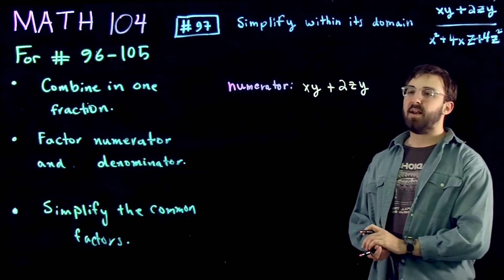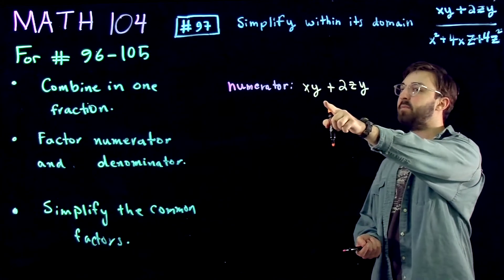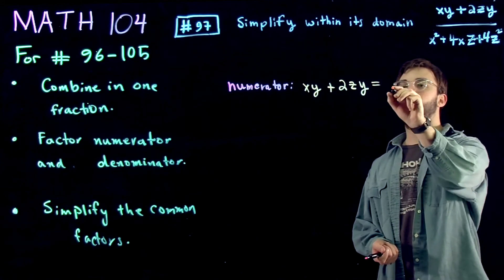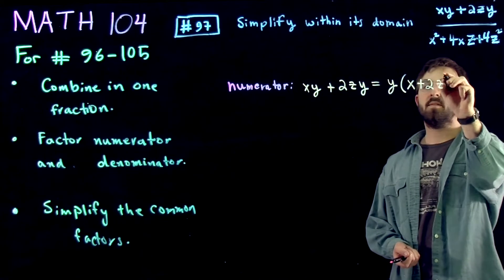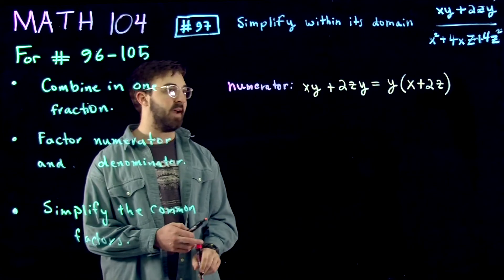You can factor this by observing that y is the common factor for the term xy and the term 2zy. So if we factor out y, we're left with x plus 2z. And that's completely factored.